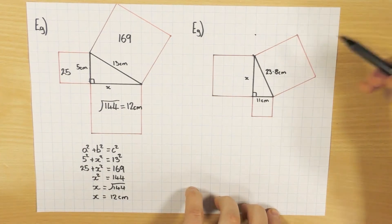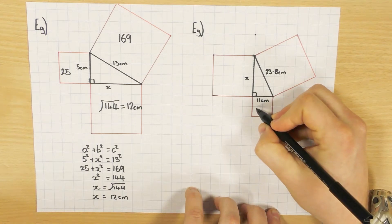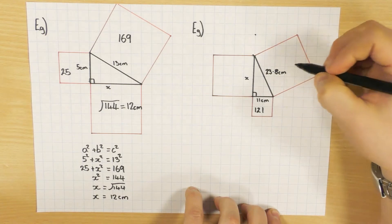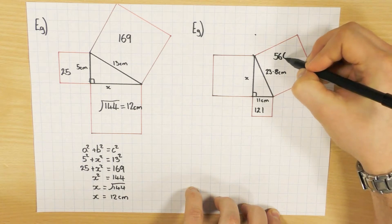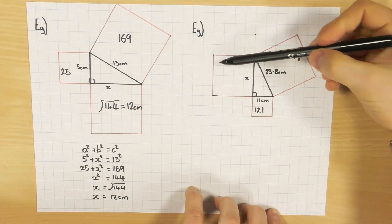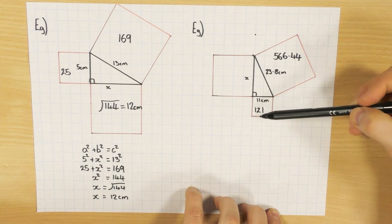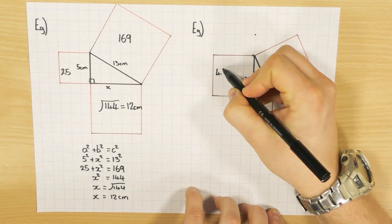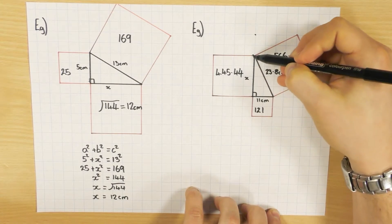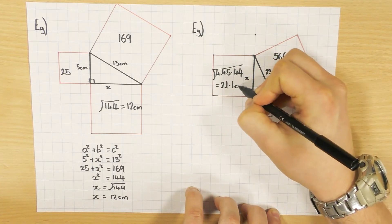This one you're definitely going to need a calculator. Work out the area of each square: 11 squared — 11 times 11 — is 121. Then 23.8 times 23.8 is 566.44, so you definitely need a calculator for that. To work out the area of the smaller unknown square, I take the big square's area from the other: 566.44 minus 121 leaves me with 445.44. To get just that length, I square root it, and I'm left with 21.1 centimetres, which has been rounded.